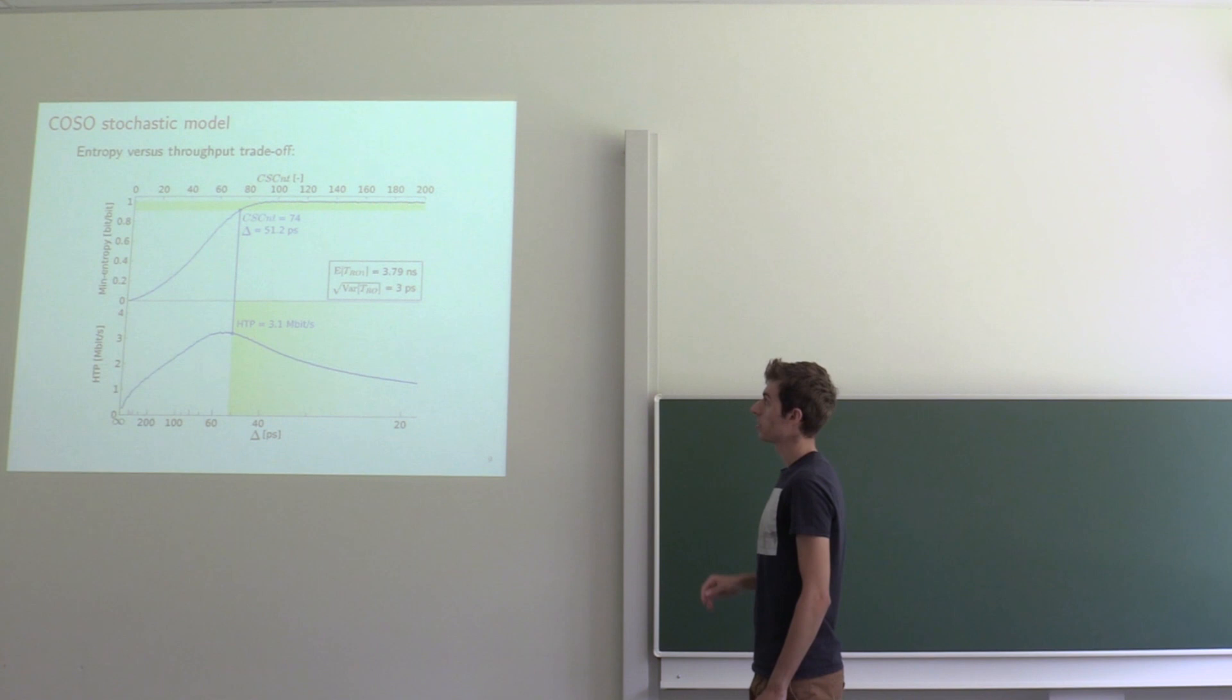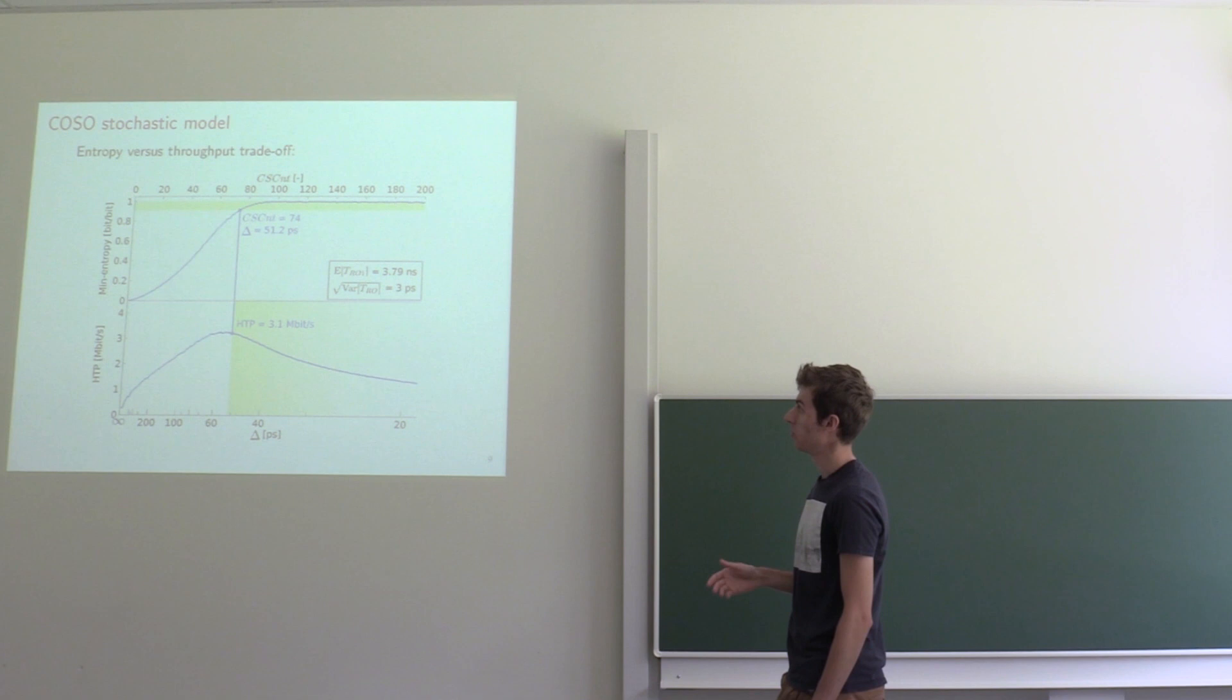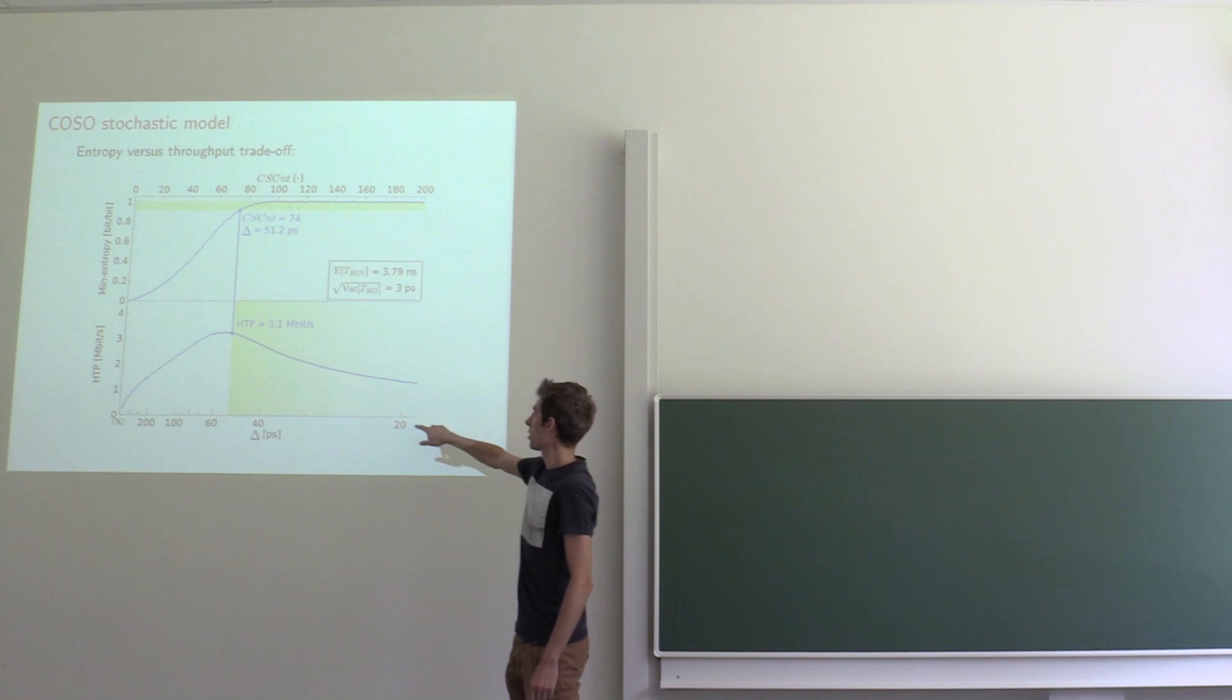The standards tell us that we need a minimal entropy of 0.91 bits per bit, so we have to be in this top green area, which corresponds to every counter value at the right of 74.